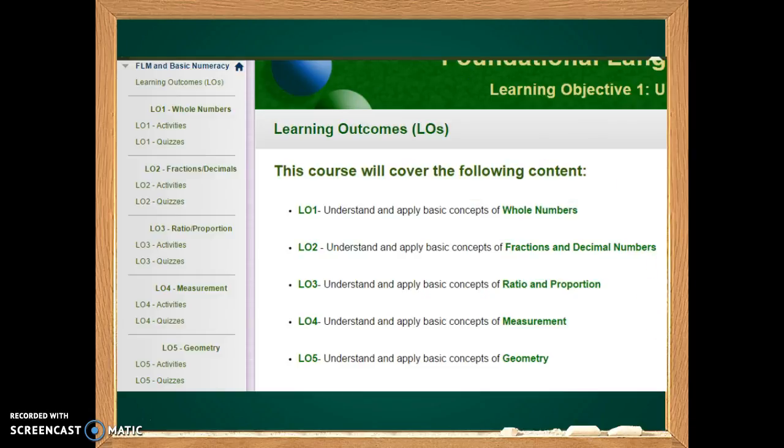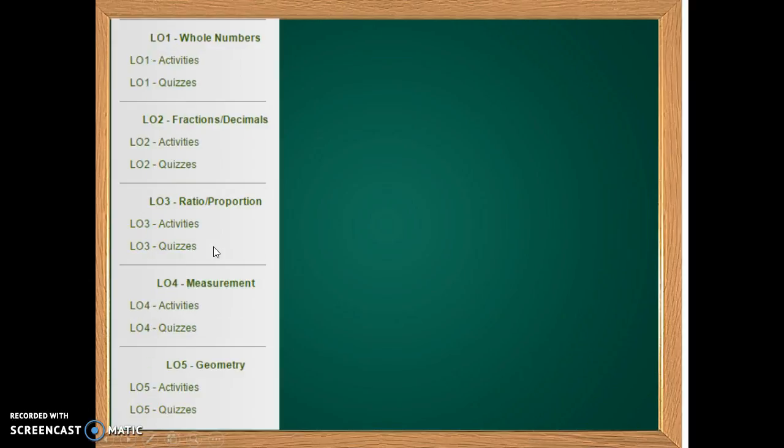From the home page you can see that there are five learning outcomes in this course. There is a learning module for each learning outcome. The links for each module appear on the menu on the left hand side. Please complete the modules in order from L01 to L05.